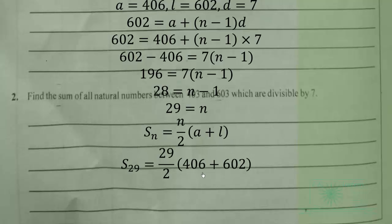So that is 406 and l is 602. So we simplify this to get 14,616. That is the sum of all natural numbers between 403 and 603 which are divisible by seven.